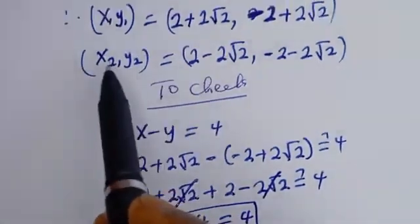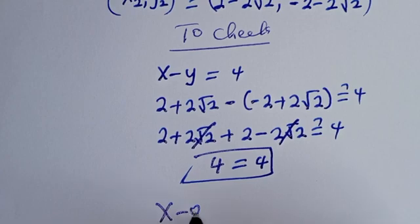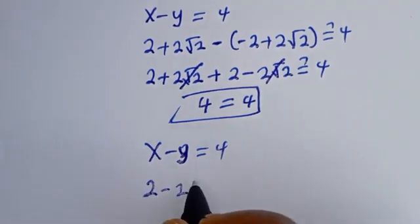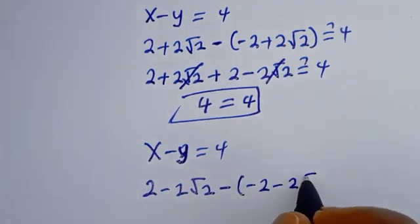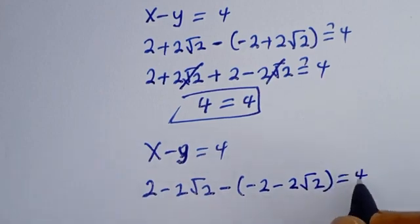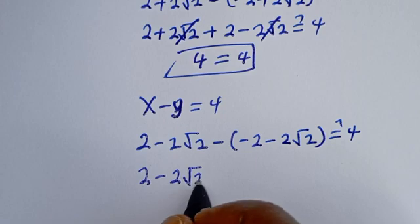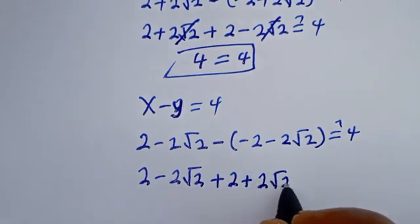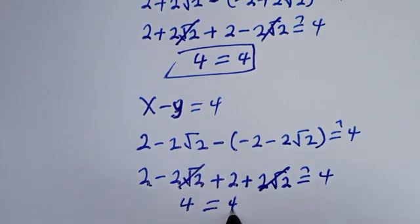Let's also check using x2 and y2. Substituting into x minus y equals 4: (2 minus 2 root 2) minus (minus 2 minus 2 root 2). This simplifies to 2 minus 2 plus 2 root 2 minus 2 root 2, and the root 2 terms cancel, giving 4 equals 4, which is also true.